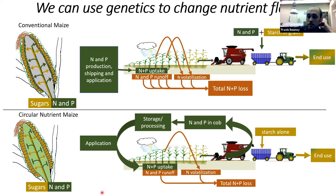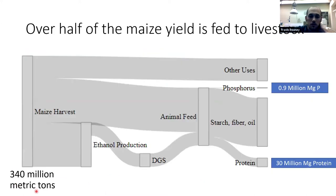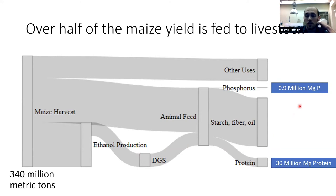Looking at maize end uses: if we take the 2019 maize harvest — about 340 million metric tons — 40 percent goes into ethanol production and 40 percent goes directly into animal feed. Out of ethanol production, the starch is converted to sugar and then ethanol; any component that's not starch comes out as distillers grains with solubles (DGS), and those distillers grains are mostly used for animal feed. So we end up with 80 percent of the phosphorus and 80 percent of the protein in maize grain being used in animal feed — about one million metric tons of phosphorus and about 30 million metric tons of protein.